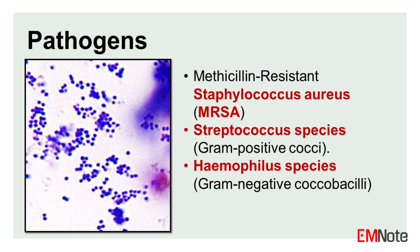Common pathogens: While various bacteria can cause orbital cellulitis, some of the most common pathogens include Methicillin-resistant Staphylococcus aureus (MRSA), Streptococcus species, and Haemophilus species.